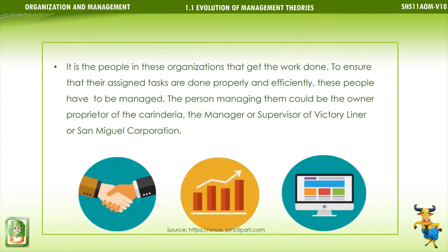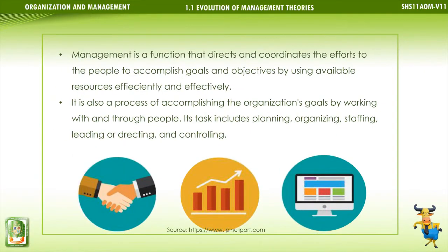To ensure that their assigned tasks are done properly and efficiently, these people have to be managed — by the owner-proprietor of the carinderia, or the manager or supervisor of Victory Liner or San Miguel Corporation. Management is a function that directs and coordinates the efforts of people to accomplish goals and objectives by using available resources efficiently and effectively. It is also a process of accomplishing the organization's goals by working with and through people. Its tasks include planning, organizing, staffing, leading or directing, and controlling.